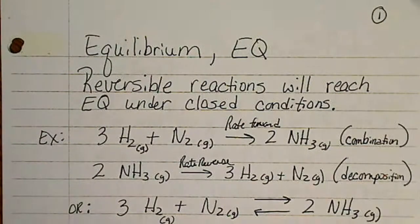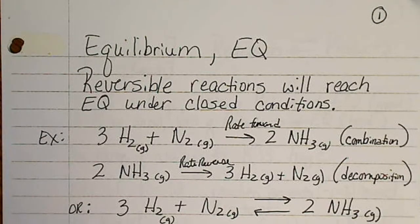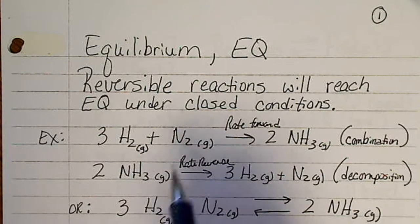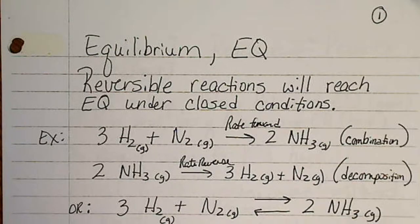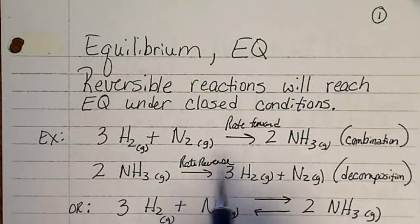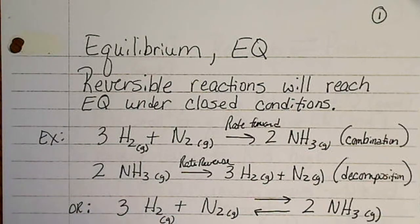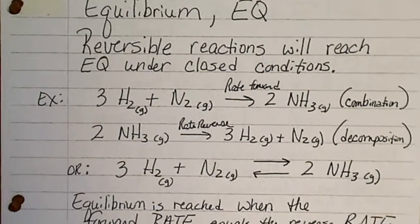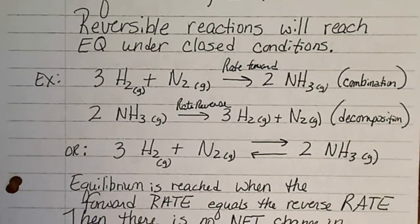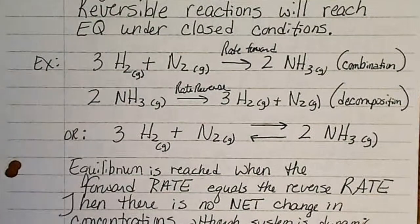In this lesson we're going to talk about chemical equilibrium. In a chemical reaction, oftentimes we'll write the reaction with an arrow proceeding to the right only, but many reactions also run in reverse. And so if we do have a reversible reaction, then at some point that reaction will reach equilibrium. We will look at an example of that and then define exactly when equilibrium has been reached.